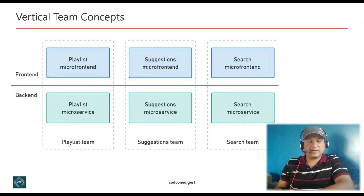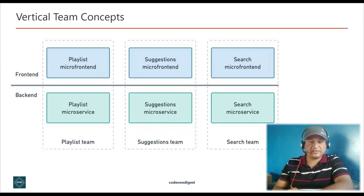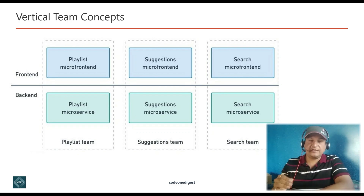In the vertical team concept, micro front-end divides the application into small independent functions, each implemented simultaneously from back-end to front-end by a separate team. Micro front-end offers the same scalability, flexibility, and adaptability as back-end microservice architecture. The application created is less cumbersome and more user-friendly. Each micro front-end can be developed with a different framework and technology. The diagram on your screen shows teams like playlist, suggestion, and search — each responsible for both front-end and back-end microservices together.